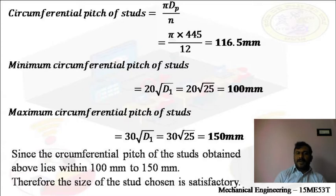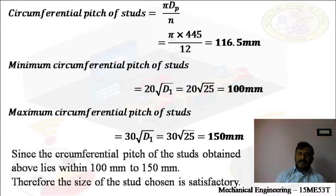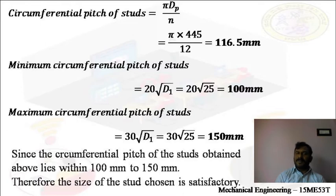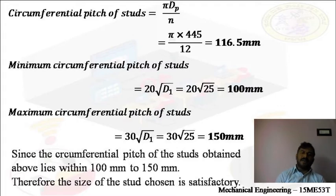In this problem, we calculated the upward force acting on the cylinder cover, then assumed the diameter of the studs and calculated the number of studs required to fix the cylinder cover. Then we checked it for a leak-proof joint. For the leak-proof joint, we calculated the pitch circle diameter, diameter of the hole, circumferential pitch, minimum circumferential pitch, and maximum circumferential pitch. If the circumferential pitch lies between the minimum and maximum, then we can say it can be used for a leak-proof joint.